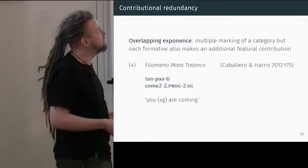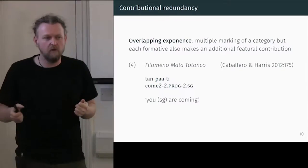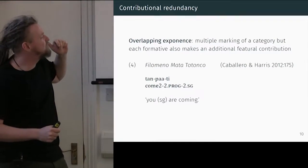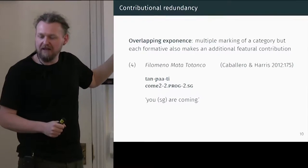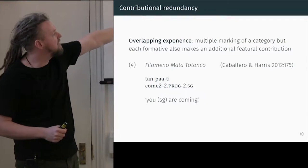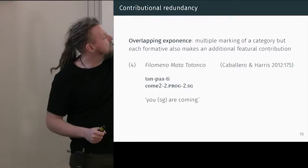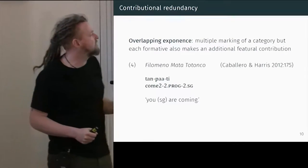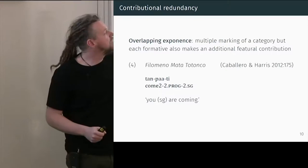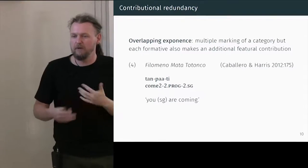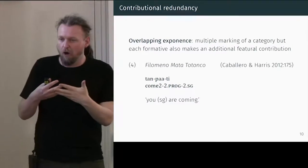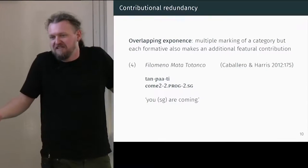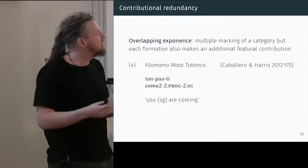Finally, we get overlapping exponents. This term goes all the way back to Matthews '74, for the keen morphologists in the room. This is where each marker — we have multiple markings of a single category — and in this example from Tonsonard's language, you get second person being marked on a stem, in the first suffix, and in the second suffix. But each suffix also marks some additional grammatical meaning: one is progressive and one is singular. If we lose this part, it would be second singular — we wouldn't lose second person information, but we would lose the progressive. They have an overlapping distribution. You're marking the same thing three times, which is redundant, but none of the individual pieces are redundant.